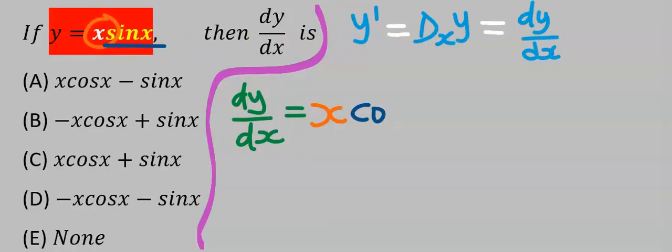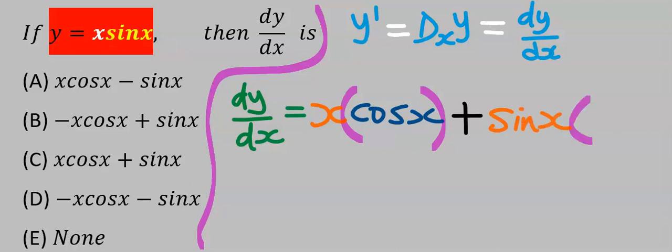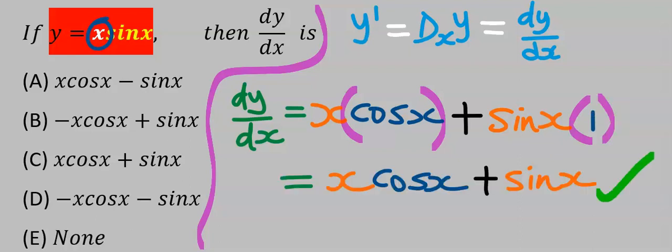Hence I'll write cos x. Next I will put a plus. Next I will keep sine x constant and I will differentiate x, which is one. Rearranging the function, this is our answer, and from the options our answer is C.